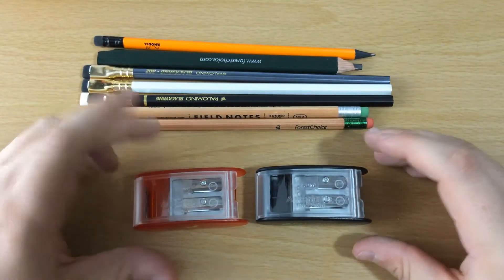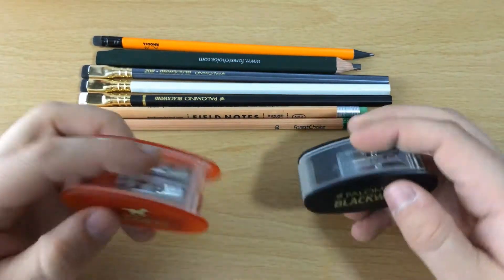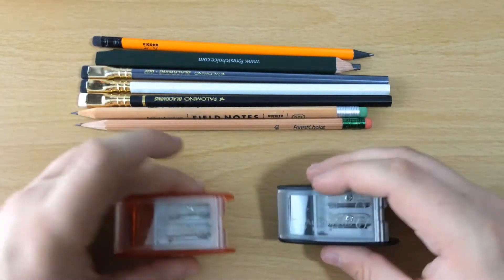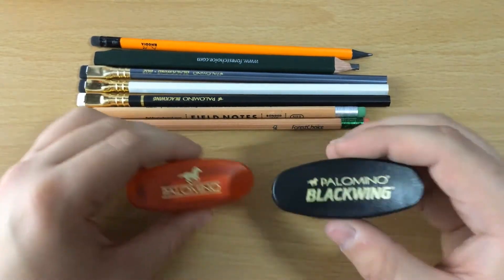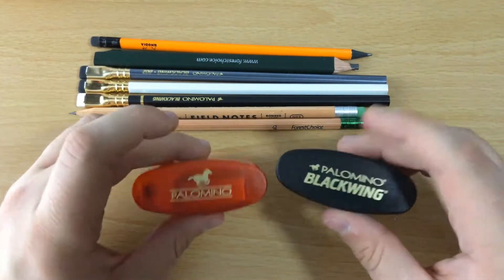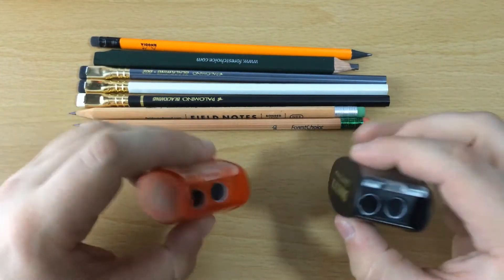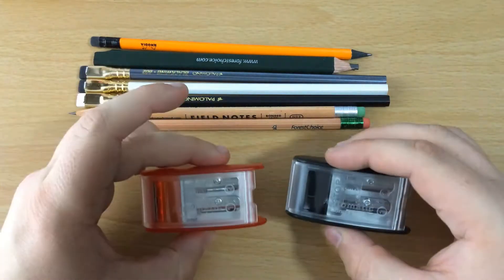All right, so here is the Palomino Long Point Pencil Sharpener. You'll notice there are two of them here. They're both exactly the same. The only difference is the color. One is just the Palomino Long Point, the other is the Black Wing. It's just the color and logo, the only difference between them. The hole sizes are the same. They're both going to produce the same kind of point.